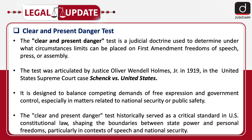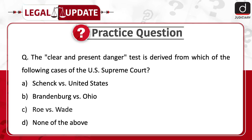Now it's time for the practice question. The Clear and Present Danger test is derived from which of the following cases of the U.S. Supreme Court? Option A: Schenck versus United States. Option B: Brandenburg versus Ohio. Option C: Roe versus Wade. Option D: None of the above. Send us the answer in the comment section. That's all for today. Thank you so much for watching.